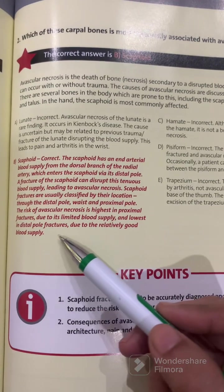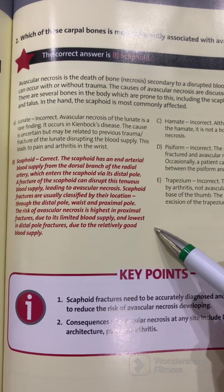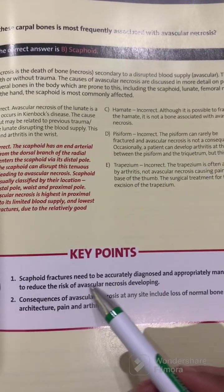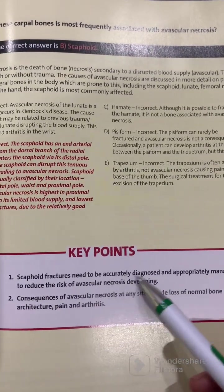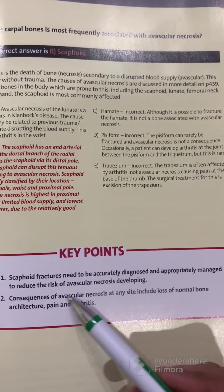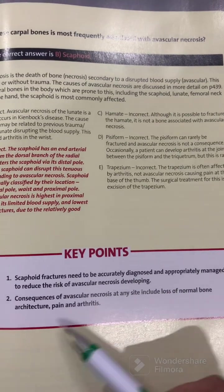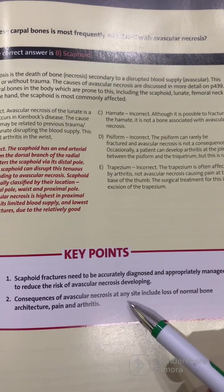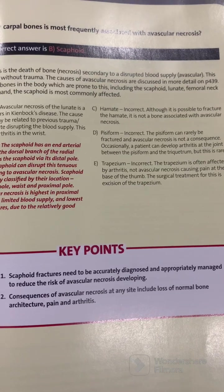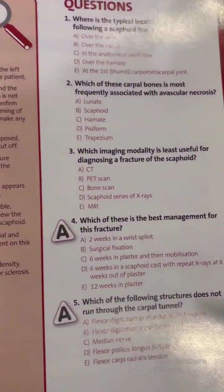The risk of avascular necrosis is lowest in distal pole fractures due to the relatively good blood supply. Key points: a scaphoid fracture needs to be accurately diagnosed and appropriately managed to reduce the risk of avascular necrosis. Consequences of avascular necrosis at any site include loss of normal bone architecture, pain, and arthritis.